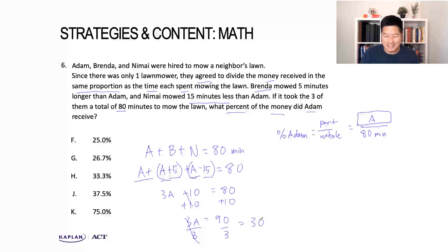We're not done yet. I'm glad we took the step to figure out what we're actually looking for. But now that I know A, I can plug that back into my initial equation. So 30 over 80, you can plug that right into your calculator, is 0.375, which is equal to, in terms of percent, 37.5%, or answer choice J.